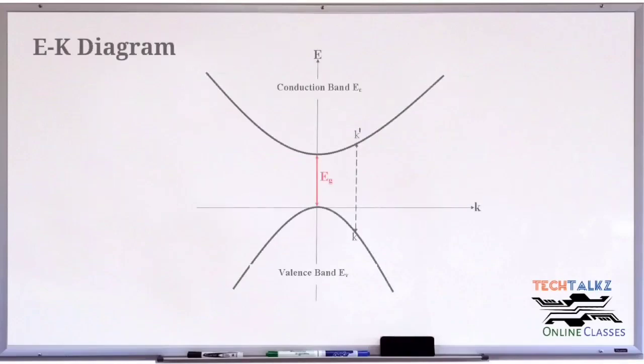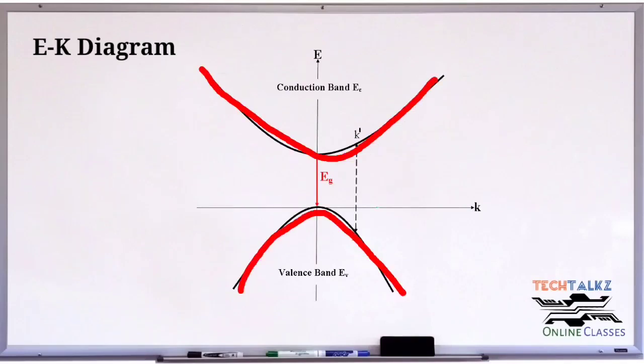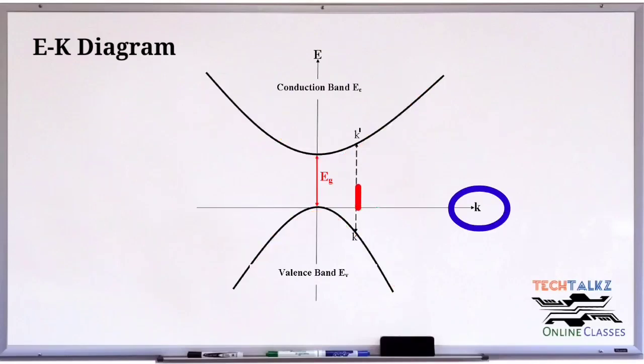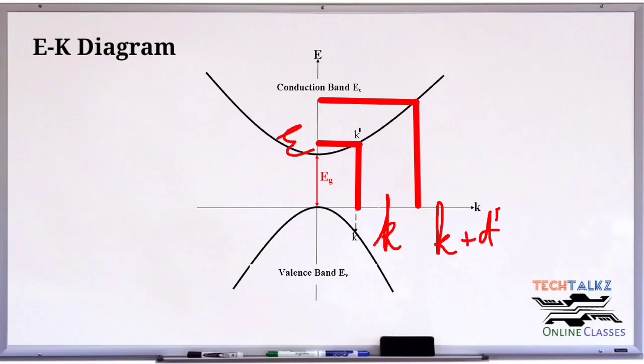Now we can draw the E-k diagram. This is energy, capital E, and these are the allowed energy levels. k is the vector space distance. For every given value of k, there is a corresponding value of E. Here is k and there is corresponding E energy level. Next step is k plus dk, then correspondingly we will have E plus dE. The number of states between k and k plus dk are here, and these are the allowed energy states, or allowed solutions as a function of vector space k.